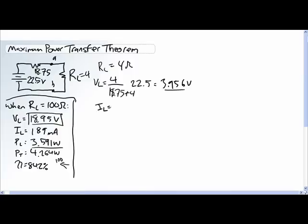So I to the load when it is a 4 ohm resistor is equal to the total applied voltage 22.5 volts divided by the total resistance 18.75 plus 4. 22.5 divided by 18.75 plus 4 is 989 milliamps.